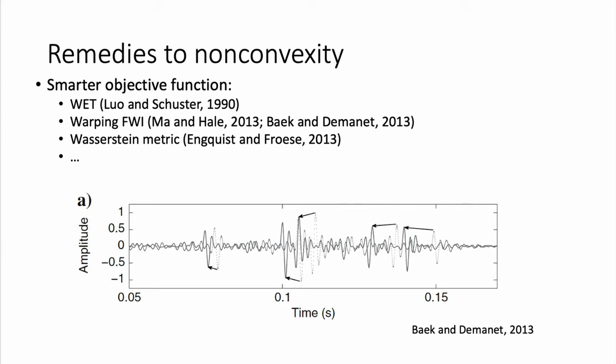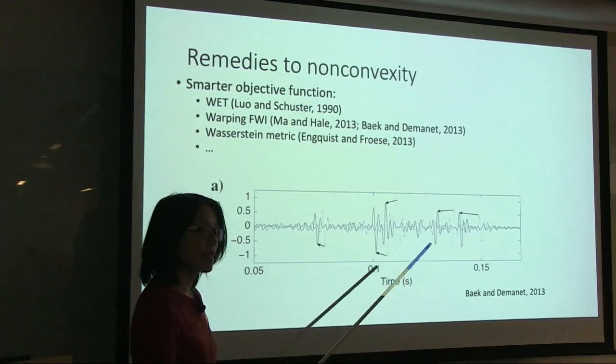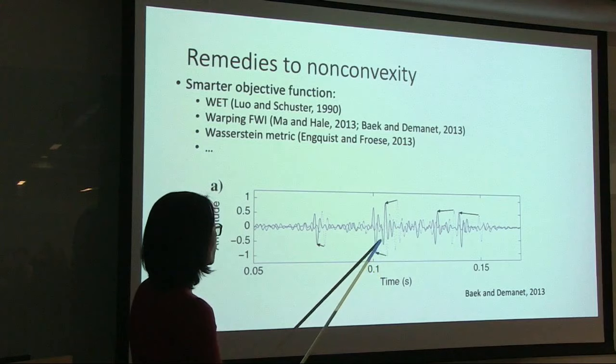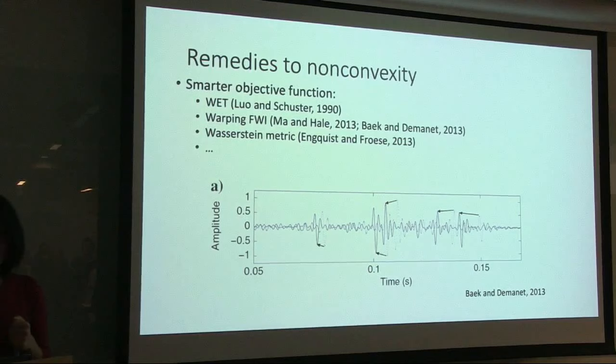There are complexities with alternative objective functions. For example, when multiple arrivals are present or geometry is complex, it becomes hard to decide which event to match. Such ambiguities can also lead to erroneous models.